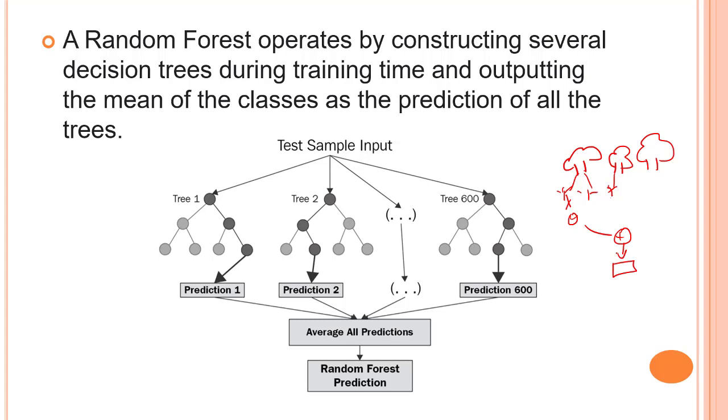The decision tree algorithm has the major disadvantage in that it causes overfitting. Your data gets overfitted, it has high variance on your dataset. We will talk more about overfitting and underfitting once we jump to the classification part.